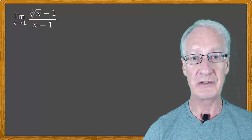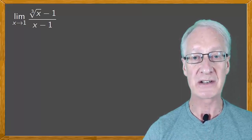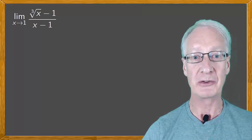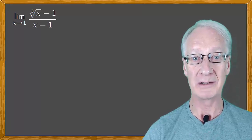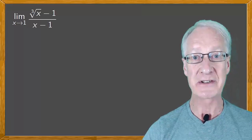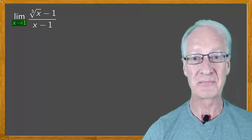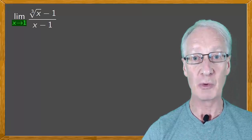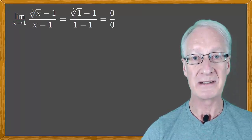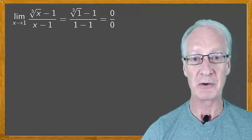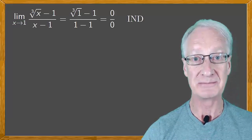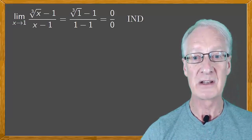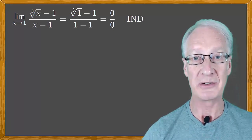First of all, for continuity of the function, since it's a quotient with polynomials and roots, if all went well, the limit would coincide with the image. But when we put x equal to 1, we get 0 over 0, which is indeterminate. So we can't get the limit from it.